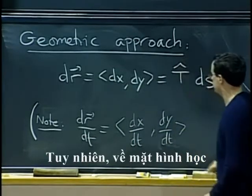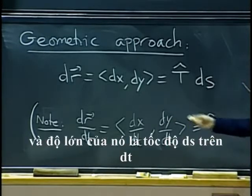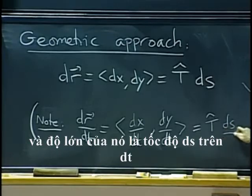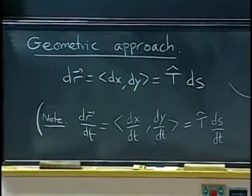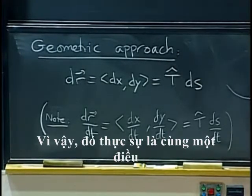But, more geometrically, the direction of the velocity vector is tangent to the trajectory. And its magnitude is speed ds/dt. So that is really the same thing.